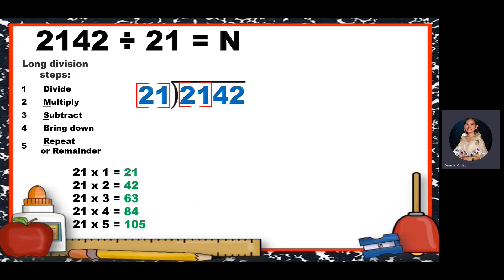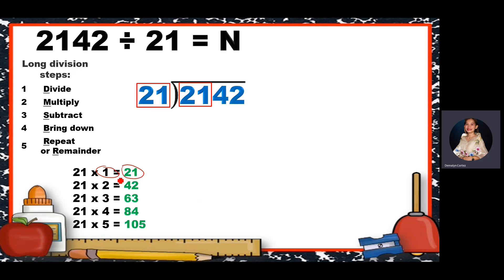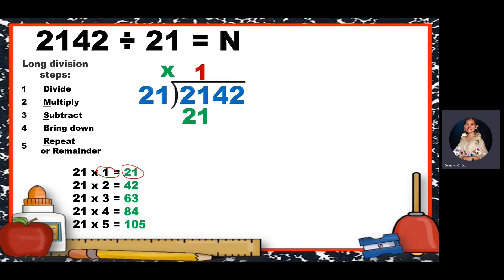We check if the first two digits are equal to or greater than the divisor. Since 21 is equal to 21, we can divide them. Find which number in our skip counting is close to or equal to 21 — it's 21 itself, so there is only one 21 in 21. 21 divided by 21 is 1. Multiply: 1 times 21 is 21. Subtract: 21 minus 21 is 0. Next, bring down — bring down 4, one number at a time.